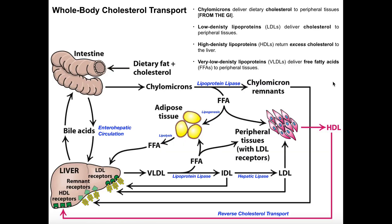This is part two of whole body cholesterol transport. In the last video, we talked about the function of chylomicrons and what they deliver. We also talked about how the liver is going to make VLDL, which has the purpose of delivering free fatty acids to peripheral tissues — a very similar function to that of the chylomicron. When VLDLs deliver those free fatty acids to peripheral tissues via the action of lipoprotein lipase, they get converted into an IDL, which is an intermediate density lipoprotein. The intermediate density lipoprotein returns to the liver where it gets acted on by hepatic lipase, and this converts IDL into LDL.